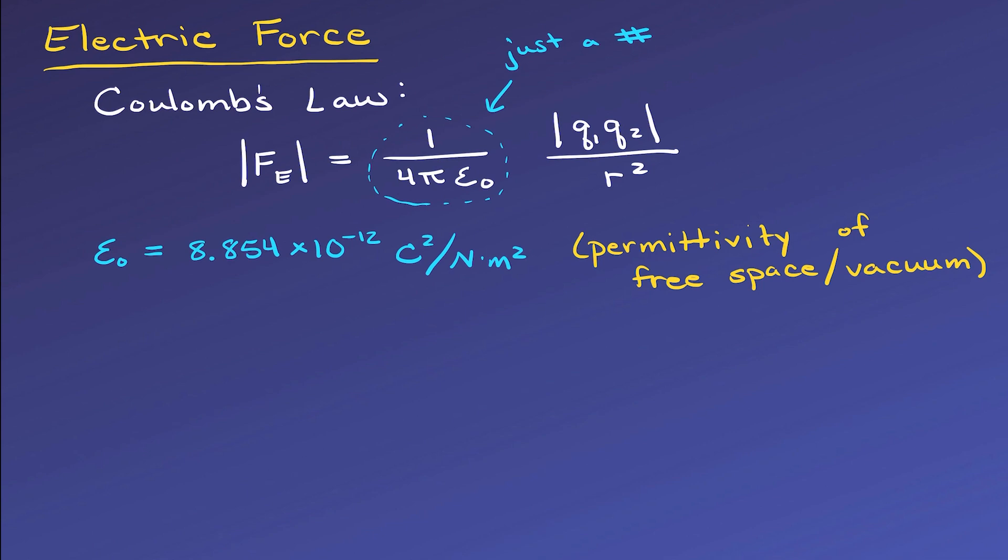Because 1 over 4 pi epsilon-naught is just a number, we often want to simplify and not write the entire thing every single time, so we just set it equal to a constant K. And when we plug all this into our calculator, 1 over 4 pi epsilon-naught, we get 8.99 times 10 to the ninth Newton meter squared per Coulomb squared. This saves some space and makes calculations slightly quicker since we've already done a bit of it.